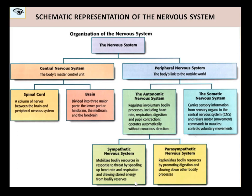So this nervous system can be divided — as you can even see it on the screen — into two important parts. One is the central nervous system and we have the peripheral nervous system.